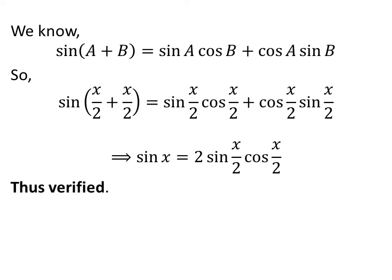Half of x plus half of x is equal to x. So, sine of x is equal to 2 times sine of half of x times cosine of half of x. Hence, verified the identity.